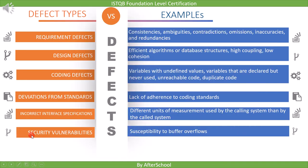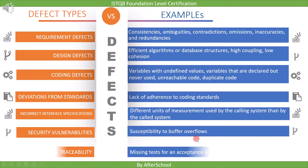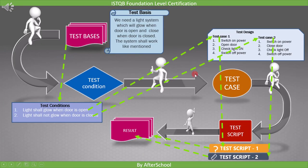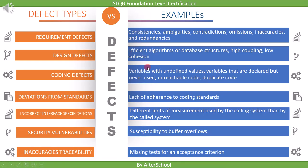The next defect type is security vulnerabilities. For example, susceptibility to buffer overflows. It is very important to remember that buffer overflow can be detected by static testing. The last point is inaccuracies in traceability, like missing tests for an acceptance criteria. We must provide traceability for all work products, and if any are missed or incorrectly linked, we can find such issues in static testing.